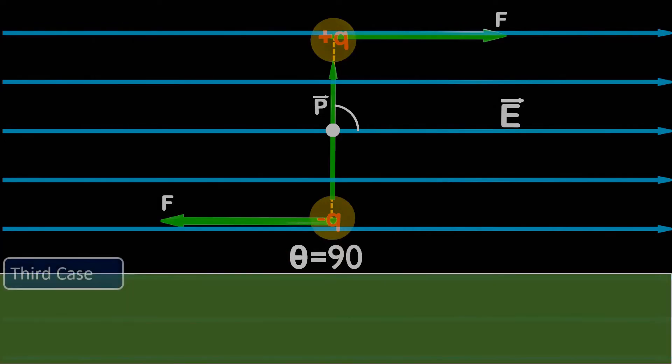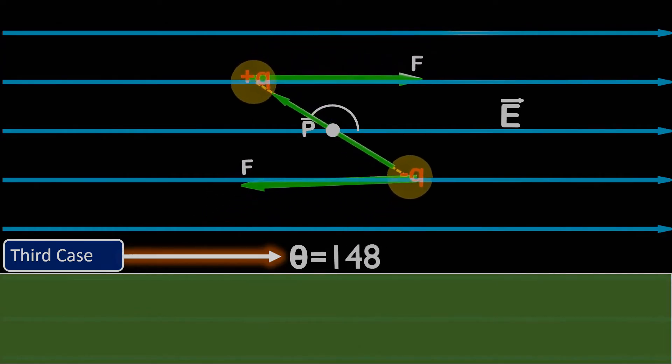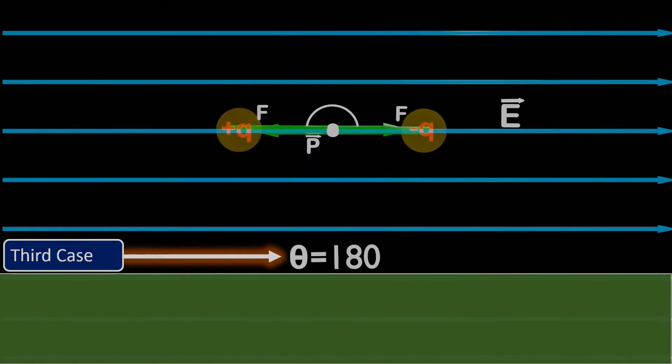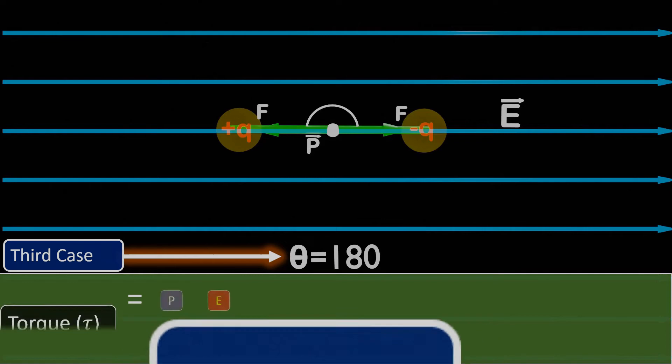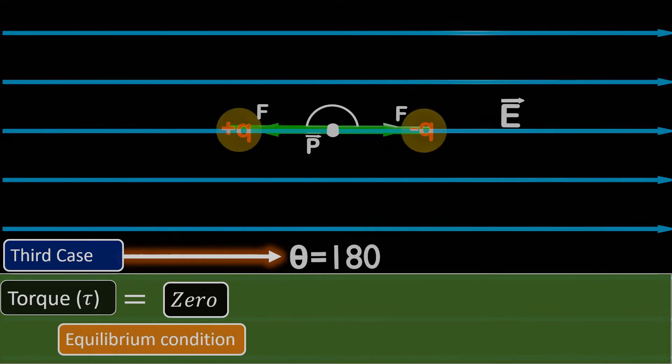Let's discuss the third case, where the dipole is placed at an angle of 180 degrees with respect to the electric field. In this case, when we substitute theta as 180 degrees in our formula, we find that the torque once again becomes 0, as sin 180 is also equal to 0. Consequently, we encountered another equilibrium condition for the dipole.